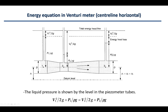At point three the velocity returns to the same value, but due to energy loss the pressure head is slightly reduced compared to point one. You can apply Bernoulli's equation between any two of the three points, equating total energy head at the first point to total energy head at the second point plus any head loss. Next, we will look at some examples.